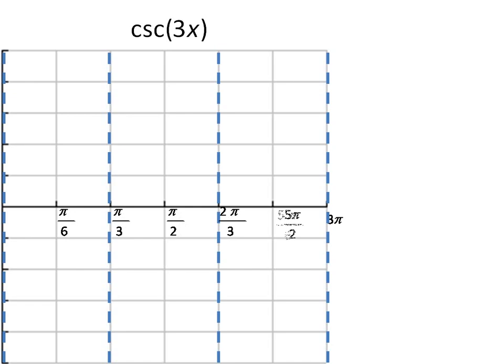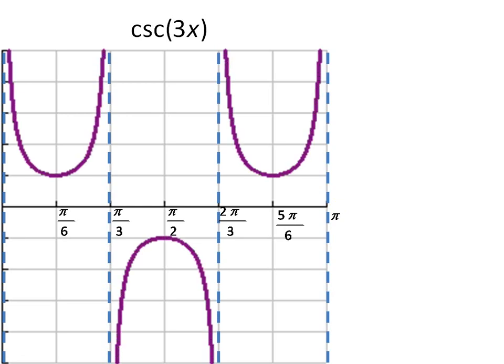5 pi over 2 divided by 3 is 5 pi over 6. And finally, 3 pi divided by 3 will just give us pi. Once that's done, we simply graph the function. And we're finished. And we have a nice cosecant graph.